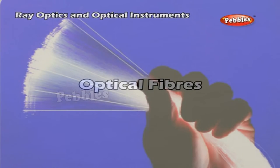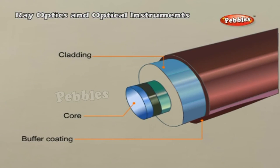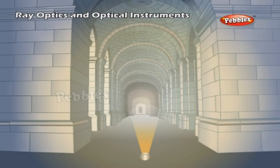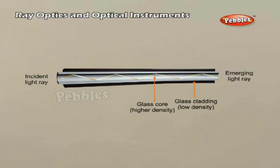Optical fibers are fabricated with high-quality composite glass or quartz fibers. Each fiber consists of a core and cladding. The refractive index of the material of the core is higher than that of the cladding. When a signal in the form of light is directed at one end of the fiber at a suitable angle, it undergoes repeated total internal reflections along the length of the fiber and finally comes out at the other end. Since light undergoes total internal reflection at each stage, there is no appreciable loss in the intensity of the light signal. Optical fibers are fabricated such that the light reflected at one end of the inner surface strikes the other at an angle larger than the critical angle.